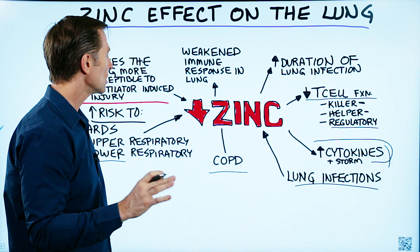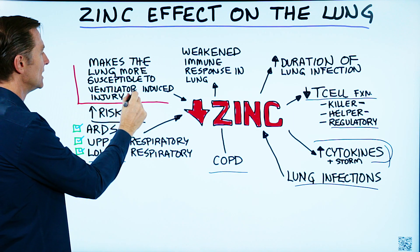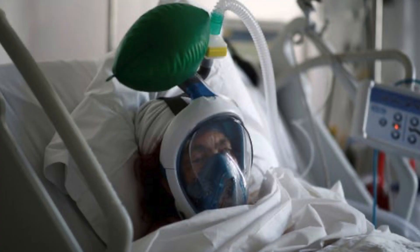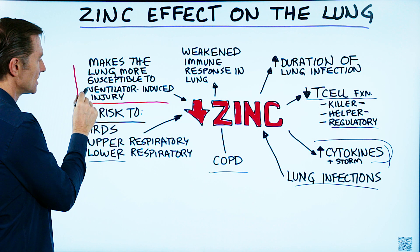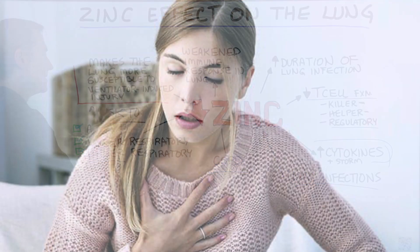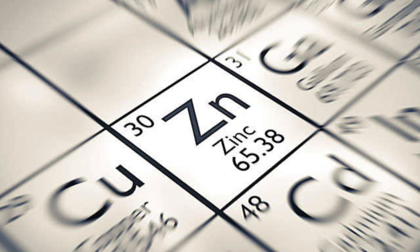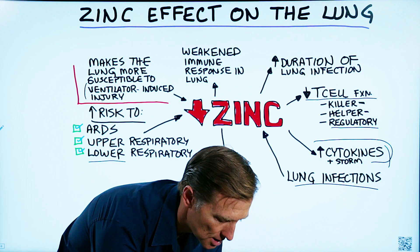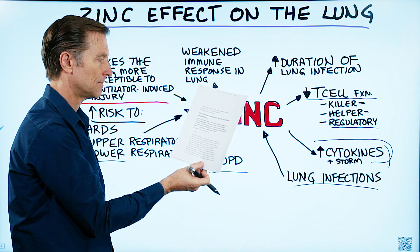This next one is very interesting: low levels of zinc can make the lungs more susceptible to ventilator-induced injury. When you get on a ventilator — a breathing machine — your risk of mortality goes up and your chances of surviving are less. The ventilator puts a lot of pressure and oxygen into the lungs, and if the lungs are already weakened, this could create additional damage. Zinc can actually help protect the lungs against this damage to a certain degree. That study is called 'Zinc Deficiency Primes the Lung for Ventilator-Induced Injury.'